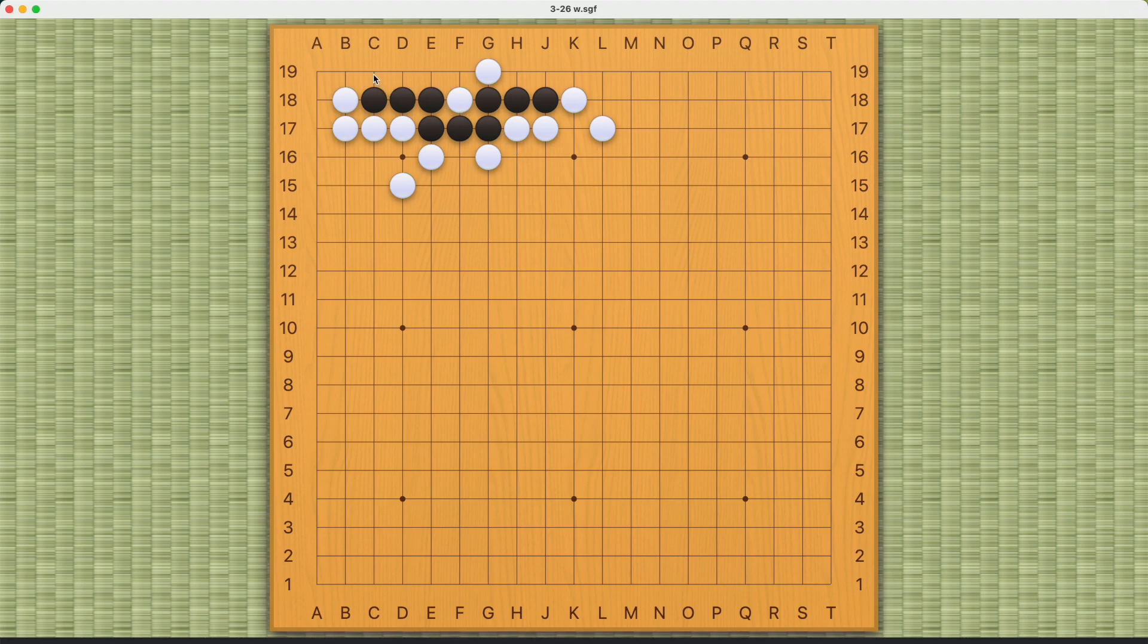If white plays any bend like this or this, then black can just capture white like this. And there will be probably three real eyes. So more than two. More than enough to make a living shape.